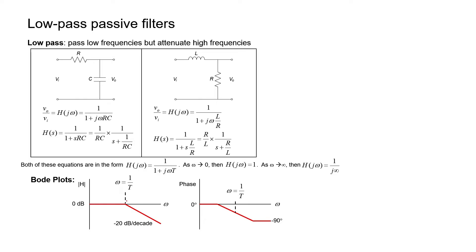Tau is the time constant. So in the RC low-pass filter, the time constant is RC. Therefore the turning point in an RC filter is going to be 1 over RC. The frequency is measured in radians per second. So if you want to convert the frequency to hertz, there's a factor of 2 pi that you also have to contend with.